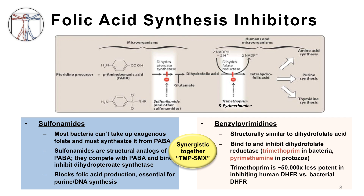The benzopyrimidines are structurally similar to dihydrofolic acid. These compounds bind to and inhibit dihydrofolate reductase, which is not unique to microorganisms. However, the drugs in this class are much less potent versus the human form of this enzyme than the bacterial forms. Trimethoprim is antibacterial and is almost always administered in combination with sulfamethoxazole as a fixed combination called TMP-SMX. In contrast, pyrimethamine, another benzopyrimidine, is antiparasitic and will be discussed in a separate video on protozoal infections.